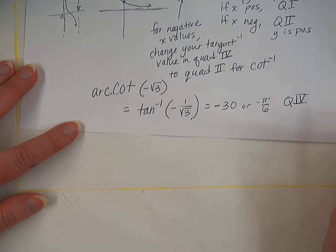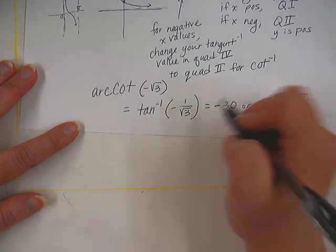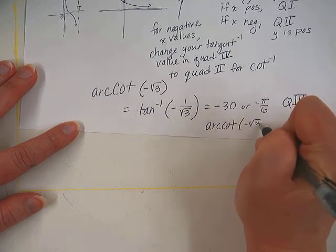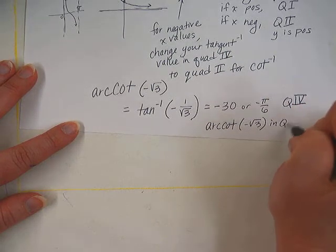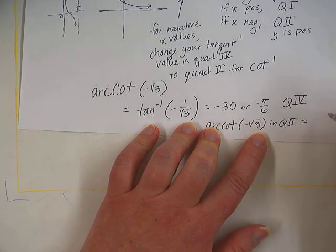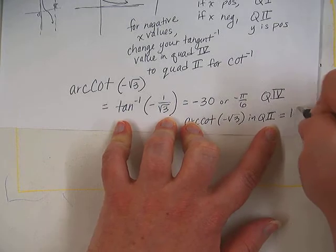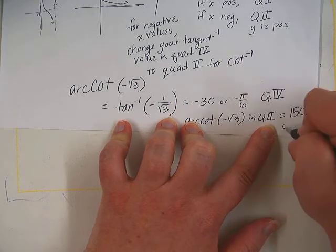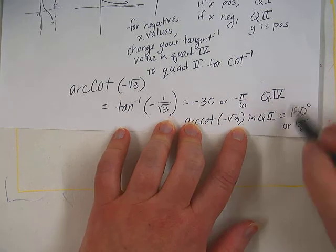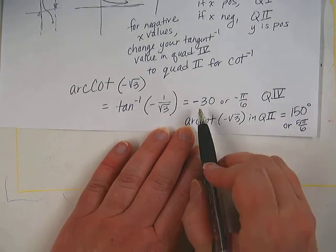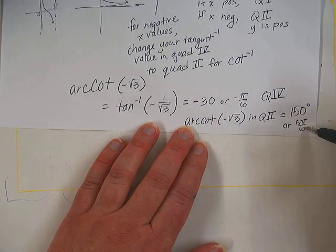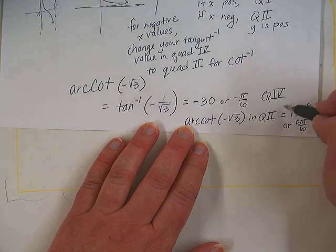So in order to get the correct answer, we actually have to change that to a quadrant 2 angle. So our reference angle was 30 degrees. So our quadrant 2 angle that's 30 degrees would either be 150 degrees or 5 pi over 6. So your y value is actually positive, even though the calculator gives you a negative angle in the fourth quadrant. The answer is a positive angle in the second quadrant.